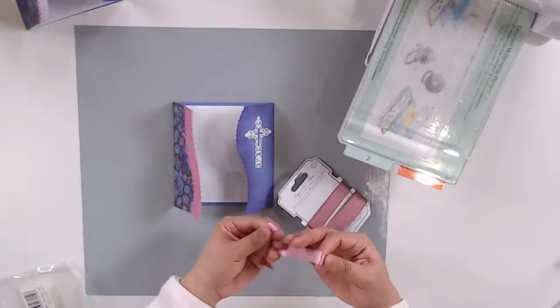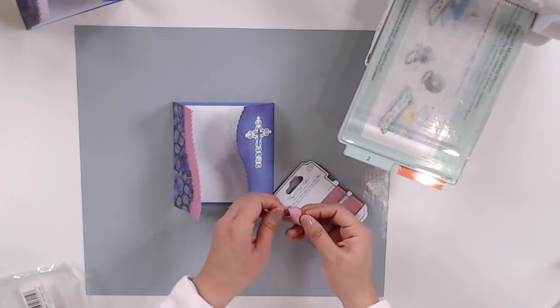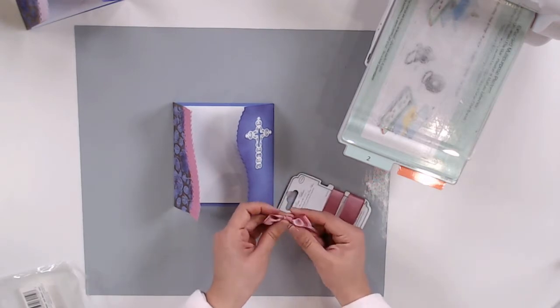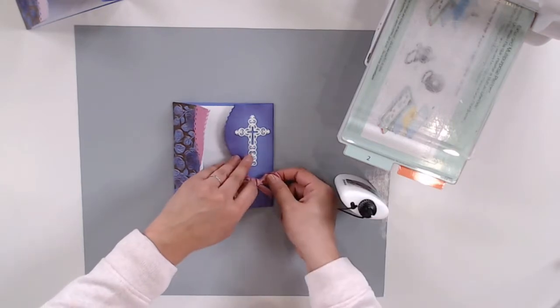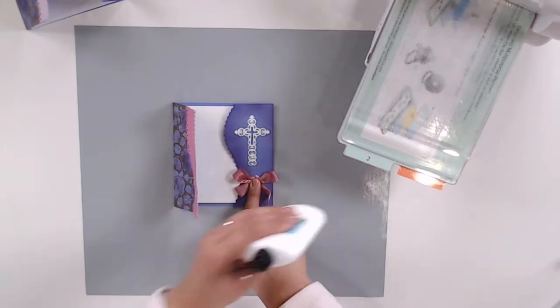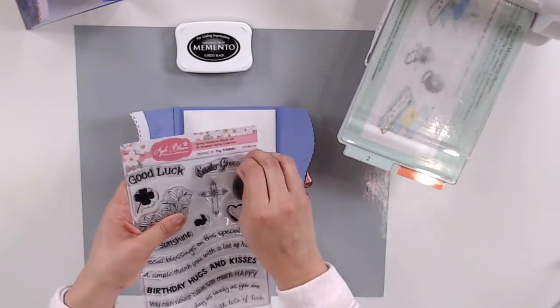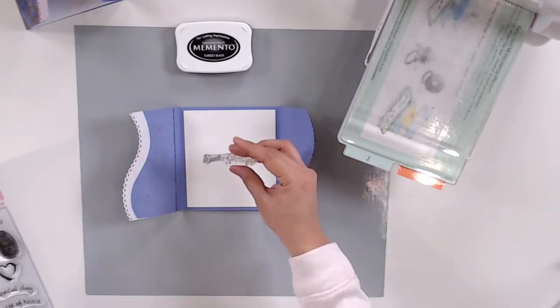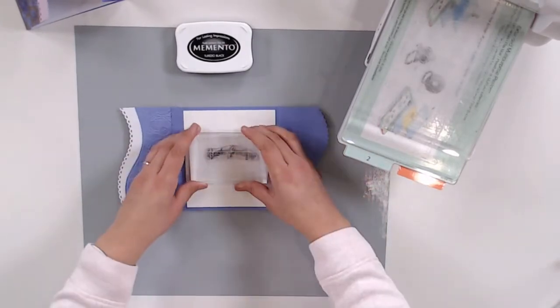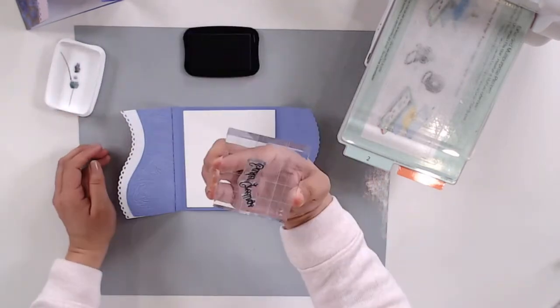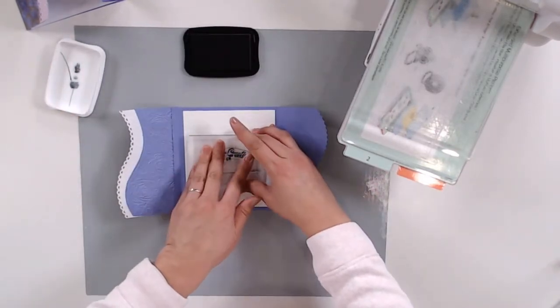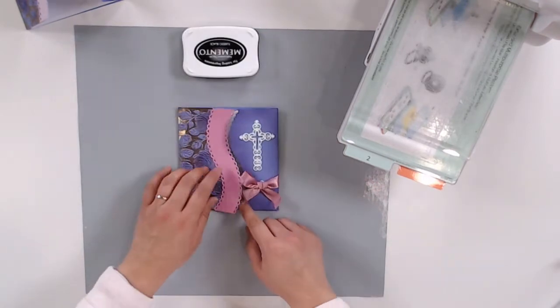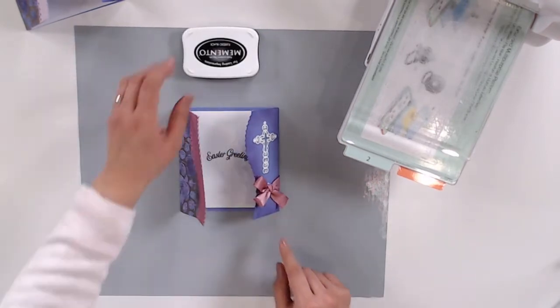I love adding ribbon to my card, so I'll be tying a bow with this pink ribbon and gluing it under the cross with some liquid adhesive. Finally, I'm going to add my sentiment, which is Easter Greetings from the All Occasions Spring Stamp Set. This stamp set is amazing because the sentiments are wave-shaped, so they fit perfectly on the coordinating embossing folders and dies.